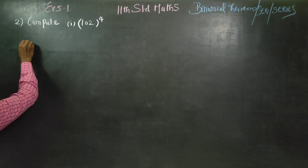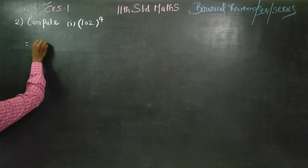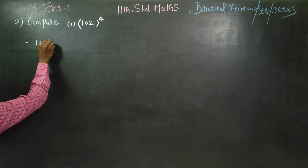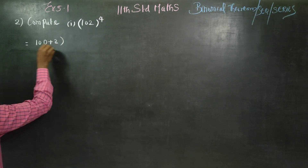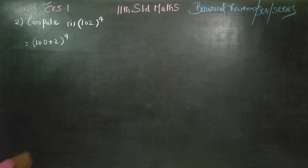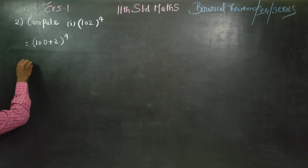Direct method: 102 can be written as (100 + 2) to the power 4. We apply the binomial theorem to expand this expression.